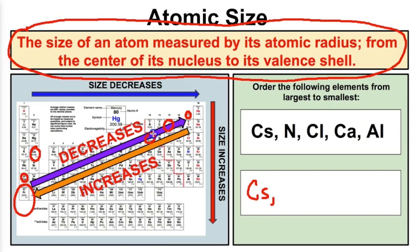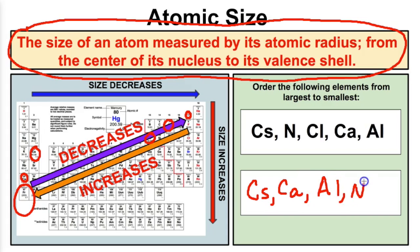And then we have aluminum, which is right here on the periodic table. Using their location, we have to predict the atom sizes from largest to smallest. Cesium is going to be the largest because it's in the bottom left corner. Next is calcium, then aluminum, then nitrogen, and finally chlorine as our smallest of the five. So from largest to smallest: cesium, calcium, aluminum, nitrogen, and chlorine. Atoms decrease going from left to right and increase going from top to bottom.